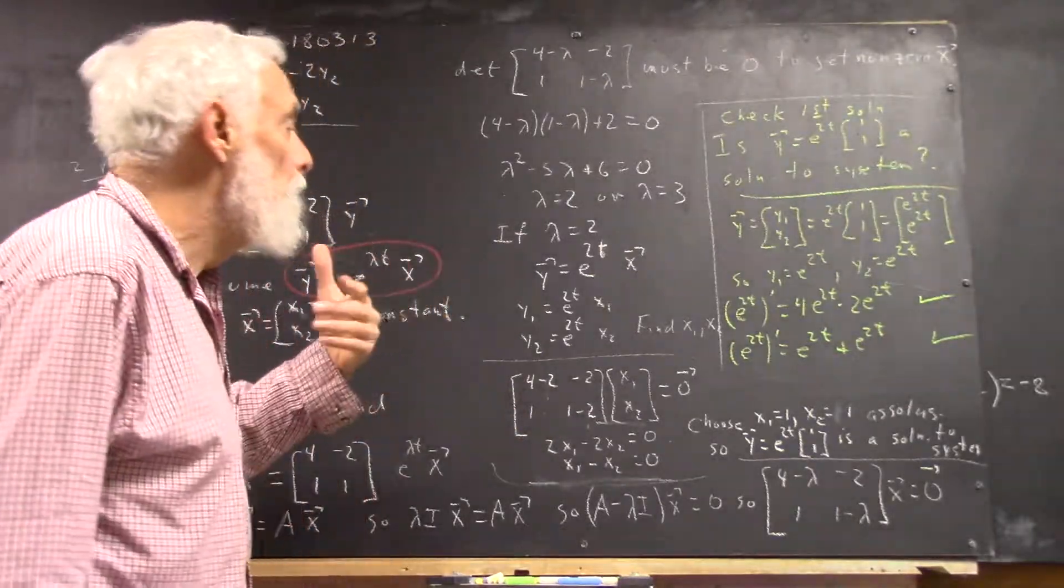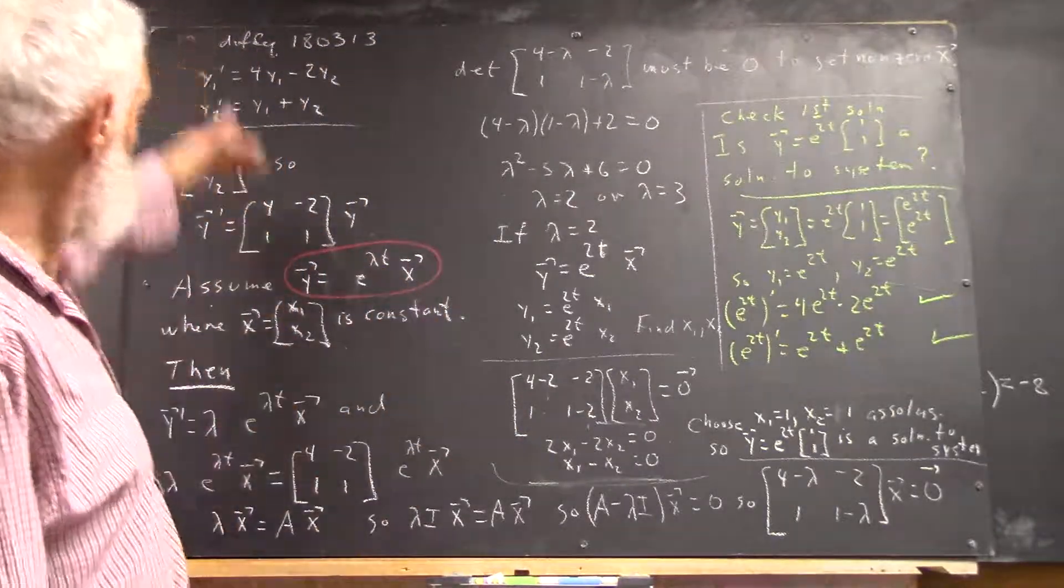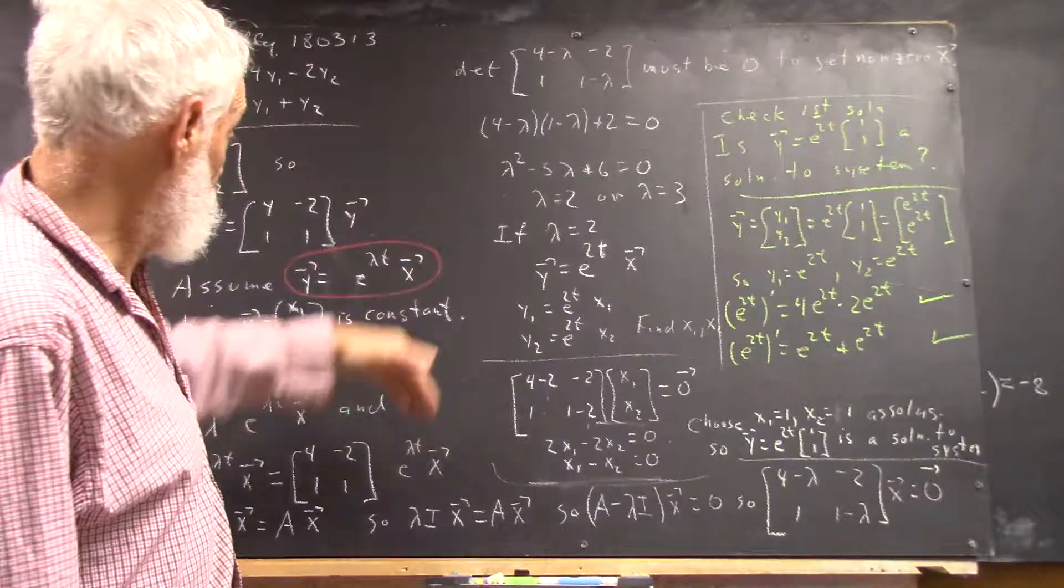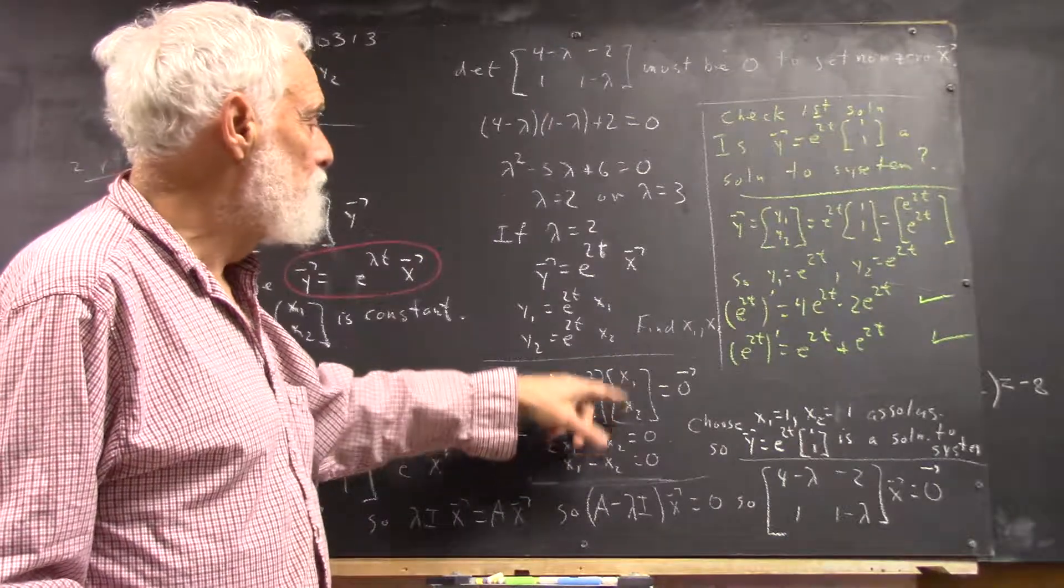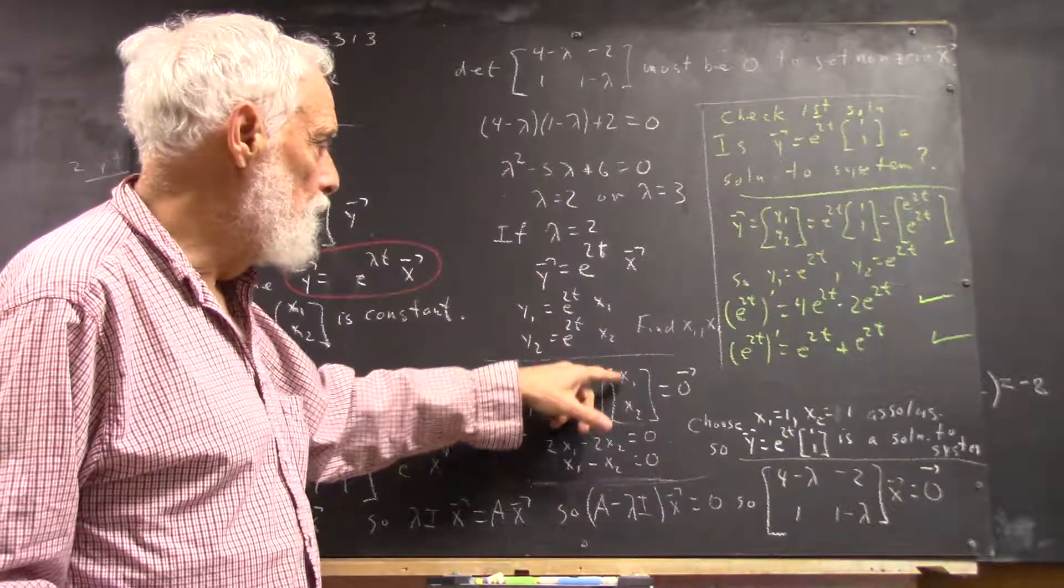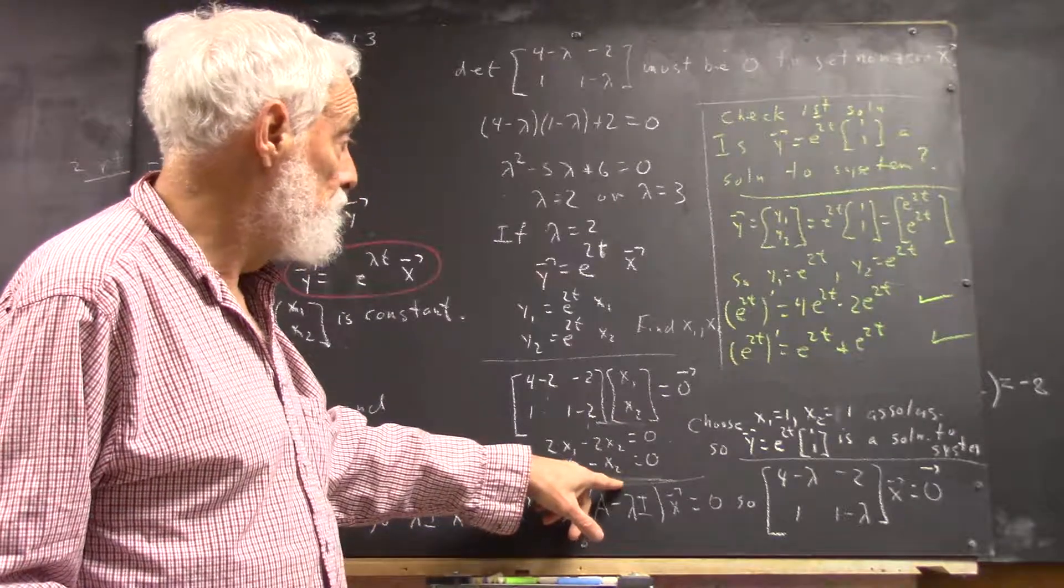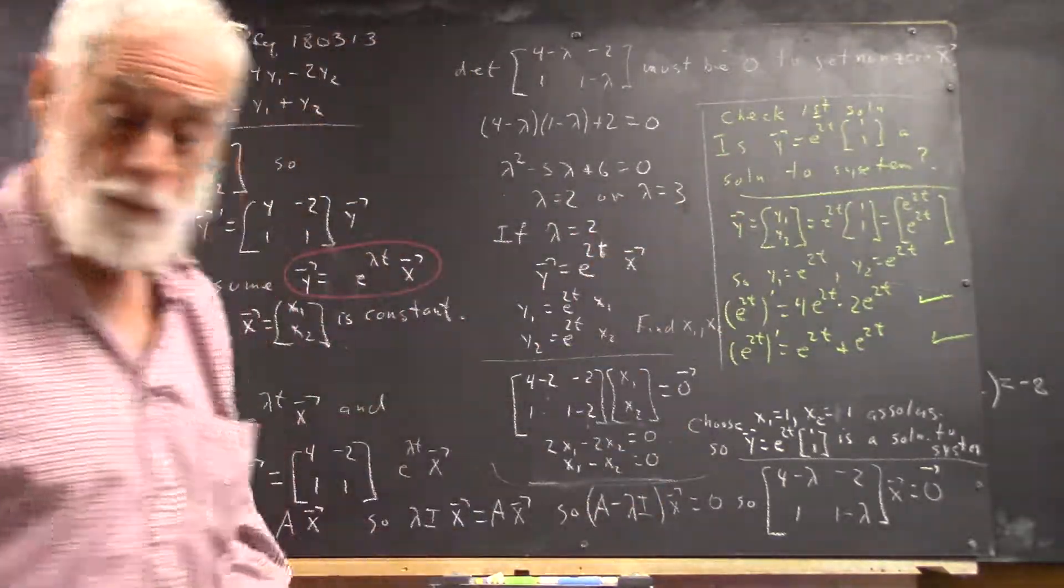And every solution will have a number of components that's equal to your number of equations because your x vector will always have that many components. So it's just a matter of solving the simultaneous equations to get some x vector that works and then writing down your solution and verifying it.